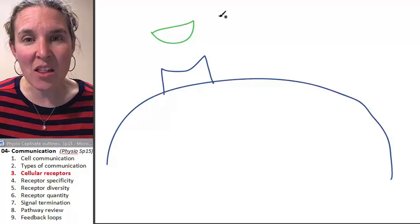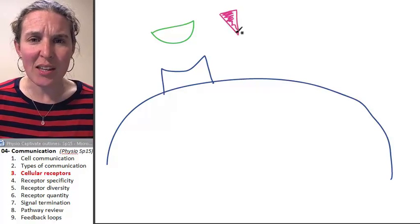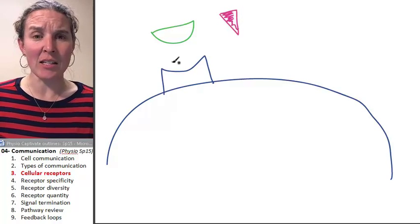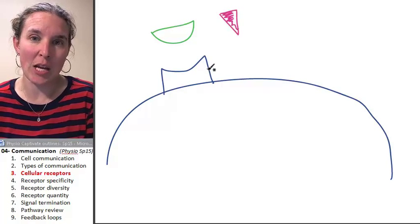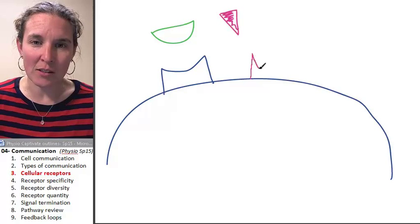If I have another chemical message that comes along that looks like this, do you agree that this chemical message might come in? It certainly isn't going to bind to this receptor. They don't have the same shape. It might bind if there was a receptor that looked like this.